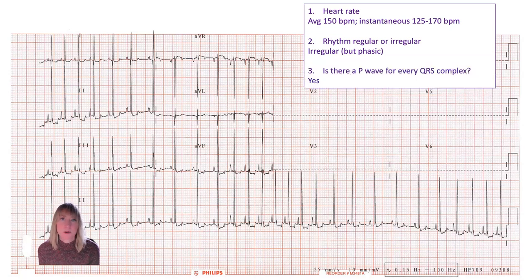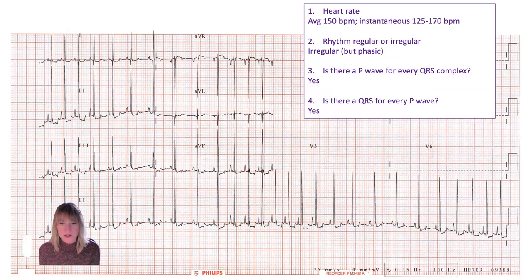Is there a P wave for every QRS? I do think there is. There is a small positive deflection in front of each of those QRS complexes. Similarly, there is a QRS for every P wave, so I don't have any lone or isolated P waves, nor do I have any lone or isolated QRS complexes.